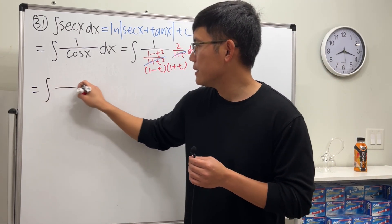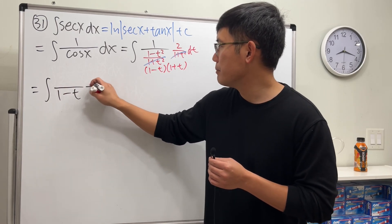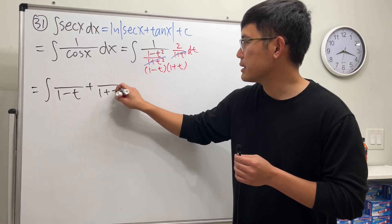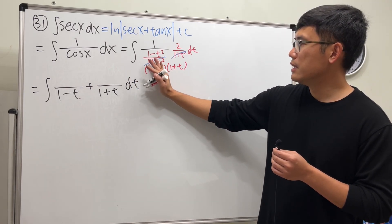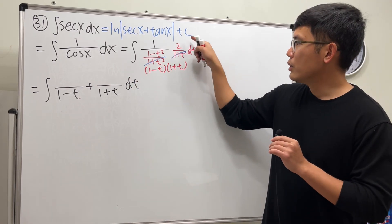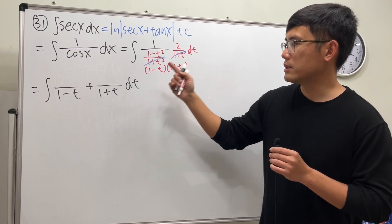So, we look at something over 1 minus t plus something else over 1 plus t. Cover this, t has to be 1. 2 over 1 plus 1 is just 1.